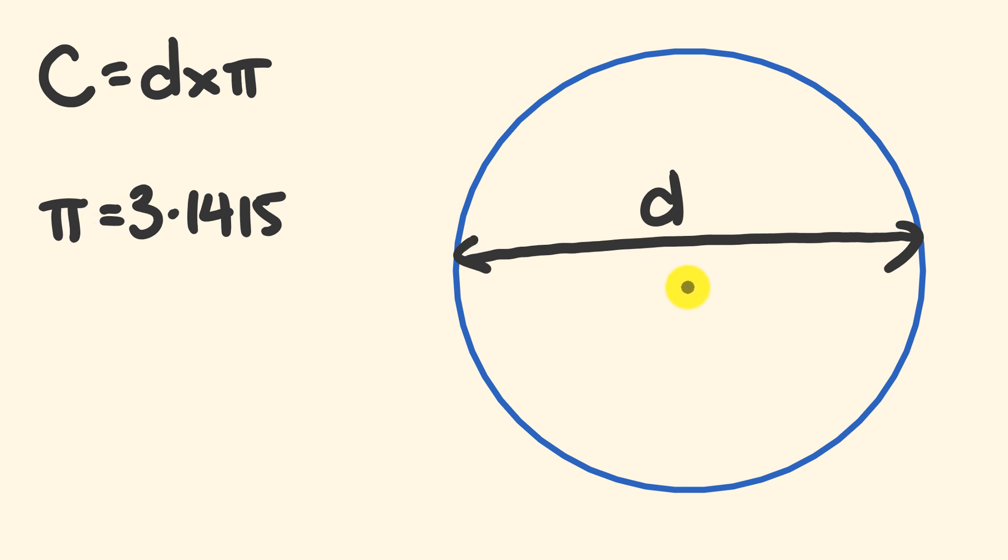Now we can also take this a little bit further. If we have a line that goes from the center to the edge of our circle, that is the radius. We can change this formula around a little bit. Because we know that the diameter is equal to twice the radius, we can change this formula so that the circumference is also equal to 2 pi r. And you're probably more used to seeing this formula. So the circumference is equal to 2 pi r.